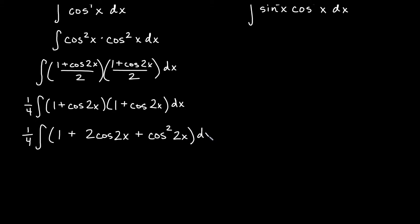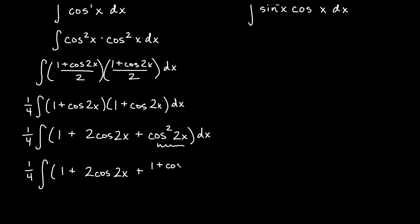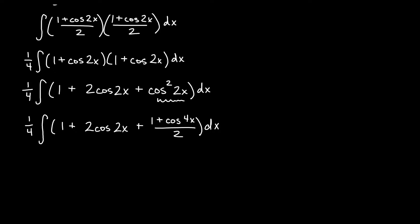That cosine squared of 2x term is a problem, because we can't directly integrate even powers of sine and cosine. So we need to change it again using a double angle identity. We have 1 fourth times the integral of 1 plus 2 cosine of 2x, and now for the cosine squared term: we get rid of the square and double the angle — 2x becomes 4x — giving us 1 plus cosine of 4x over 2. Now all the even powers are gone and we can work toward integrating.